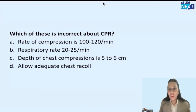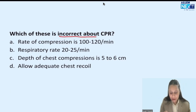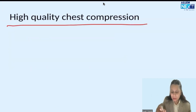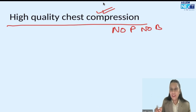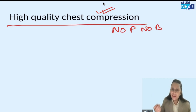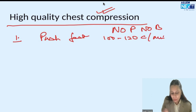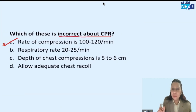Coming to the third question — again an expected question from CPR. The question was: which is incorrect about CPR, cardiopulmonary resuscitation? Whenever someone has no pulse and no breathing, we start with high quality chest compression. There are five points to remember. First: push fast — that is 100 to 120 compressions per minute. This is correct.